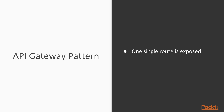The benefit of the API gateway pattern is that not all your API routes are exposed to the client. It has to use only one route, and all the business logic and routing logic is decided by your router or your API gateway.